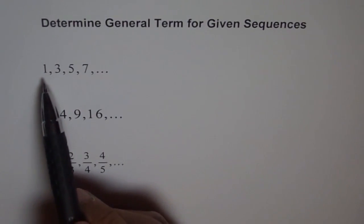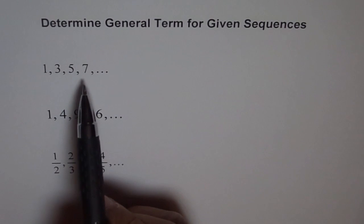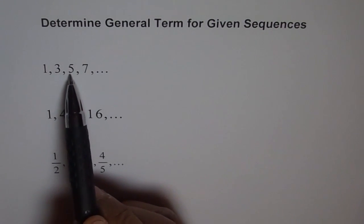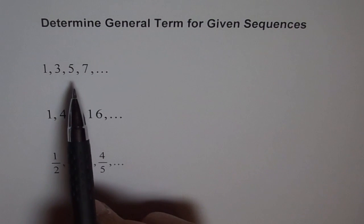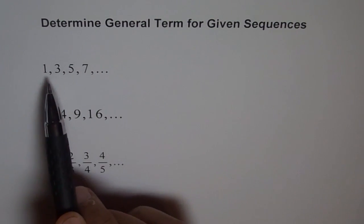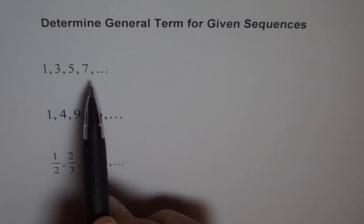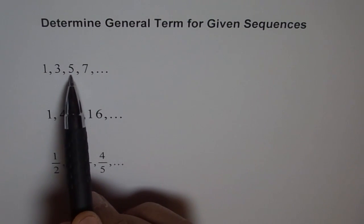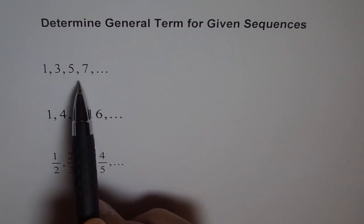The first one says 1, 3, 5, 7. In this sequence, these are the terms. This is called the first term, the second term, the third term, the fourth term. The terms are the different elements in our sequence.